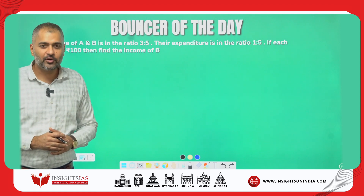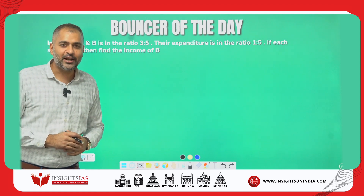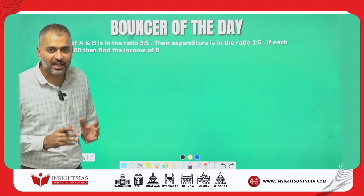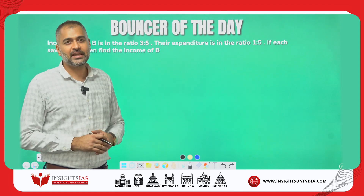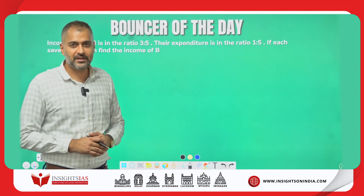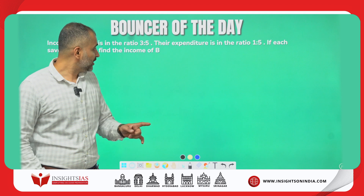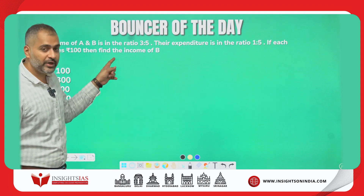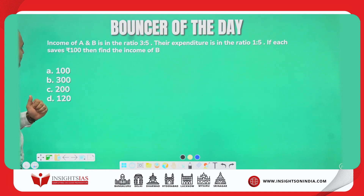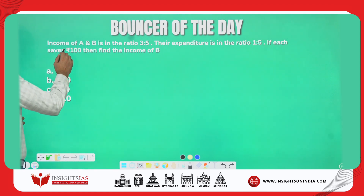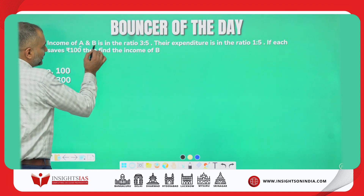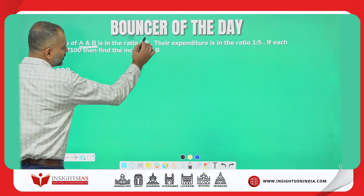Hello everyone, I'm Shamanth Gouda, CSAT faculty at Insights IAS. I welcome you once again for the Question of the Day series. This was the last video's bouncer: the income of A and B is in the ratio 3 is to 5.